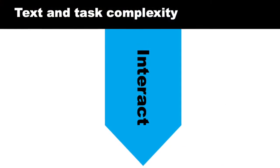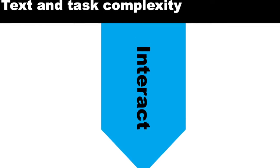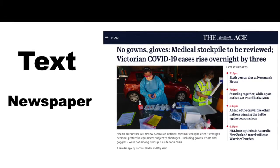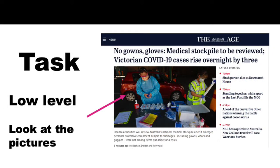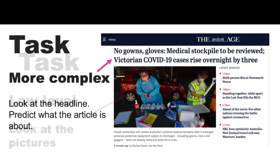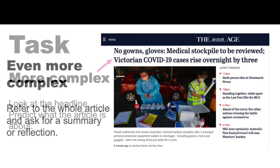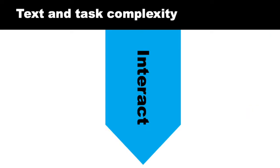How the last two variables of text and task complexity interrelate is important in determining the level of difficulty of a task. For example, take a newspaper as a text. If you want to use it for a low level, you might just look at the pictures — a fairly low level task. At a more complex level, you might look at the headline and try to predict what the article is about. Or using a whole article or editorial, you could ask for a summary or reflection. It's how text complexity and task complexity interact that determines the level of a task.